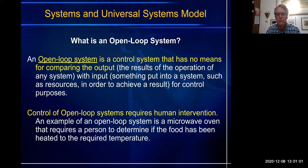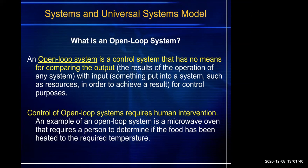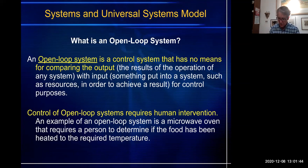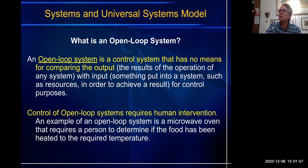Control of open-loop systems requires human intervention. An example of an open-loop system is a microwave that requires a person to determine if the food has been heated to the required temperature. How do you do that? I put a big bowl from the refrigerator in the microwave and nuke it for a minute. It's still going to be a little bit cold, right? So I've got to stick my finger in there and see — is it still cold in the middle? I better put it in for another two minutes. I am the feedback loop.